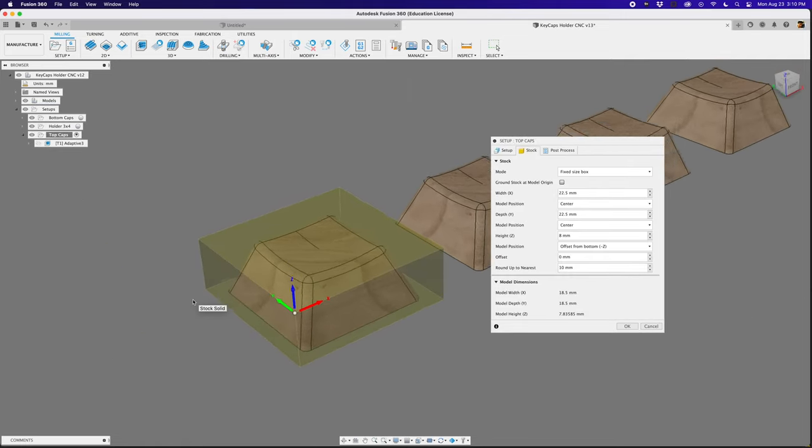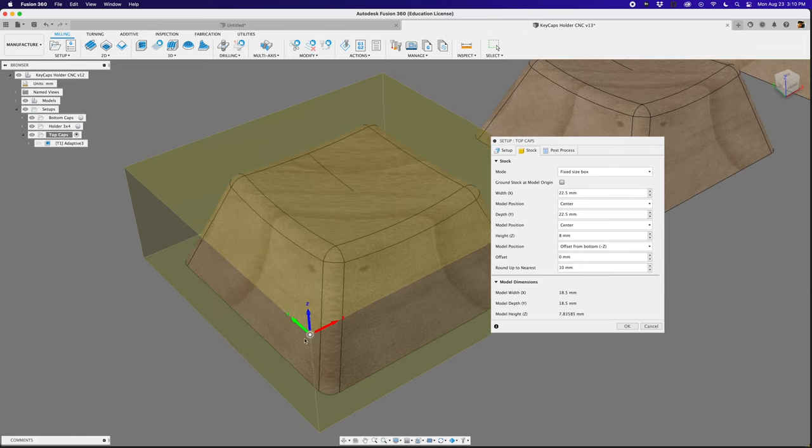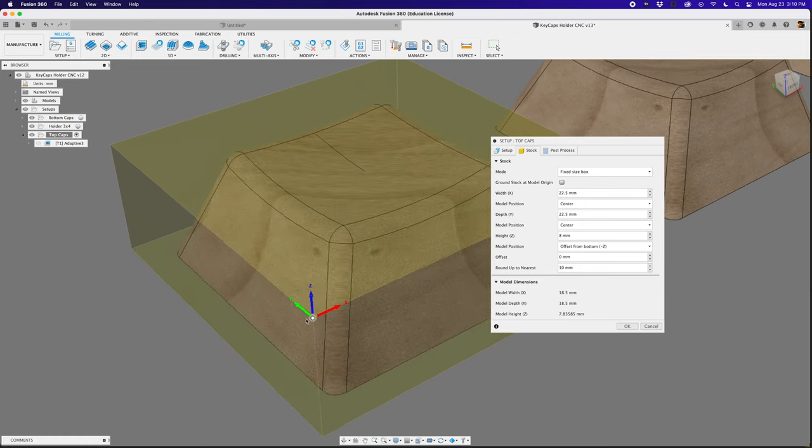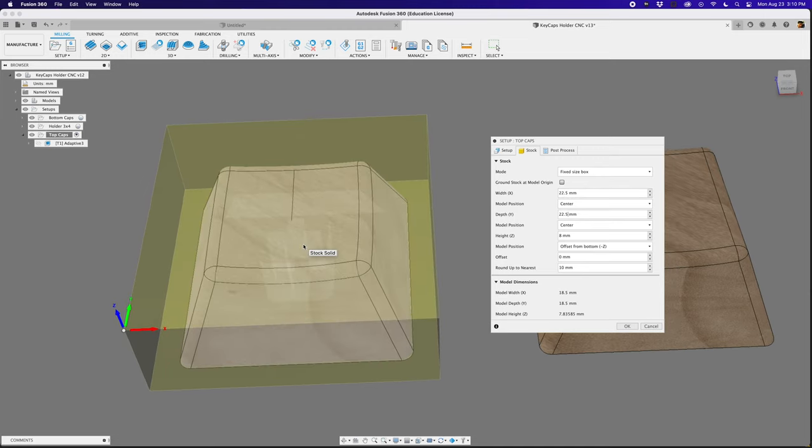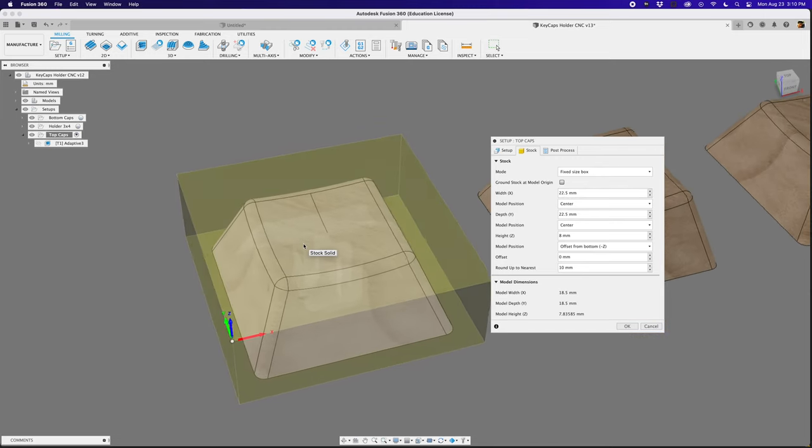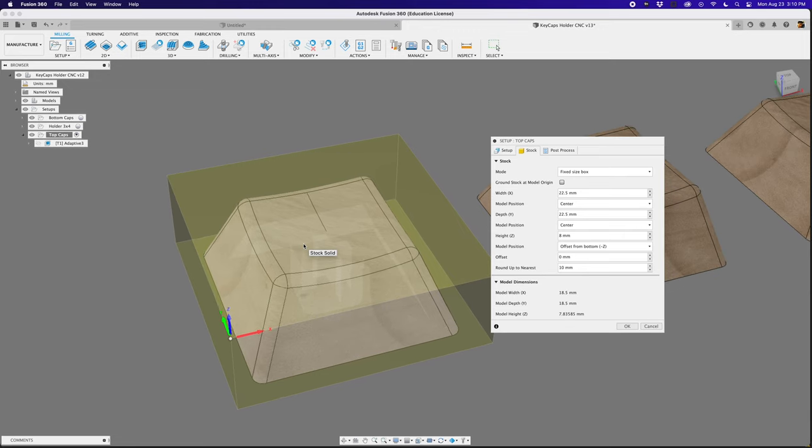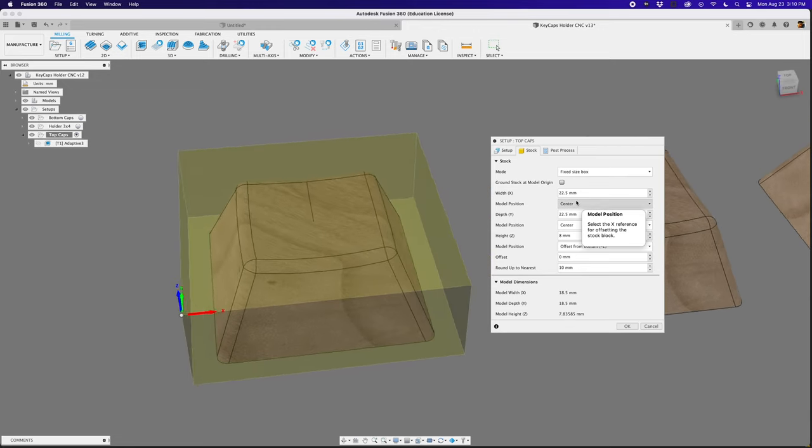For the top side of the keycaps, I set the stock so the origin is also at the lower left corner on the top side of the material. The stock is set to a fixed size so that the width, height, and thickness are all the exact same dimensions as the square keycap. The model position is centered with the stock so it should line up perfectly with the bottom side of the keycap.